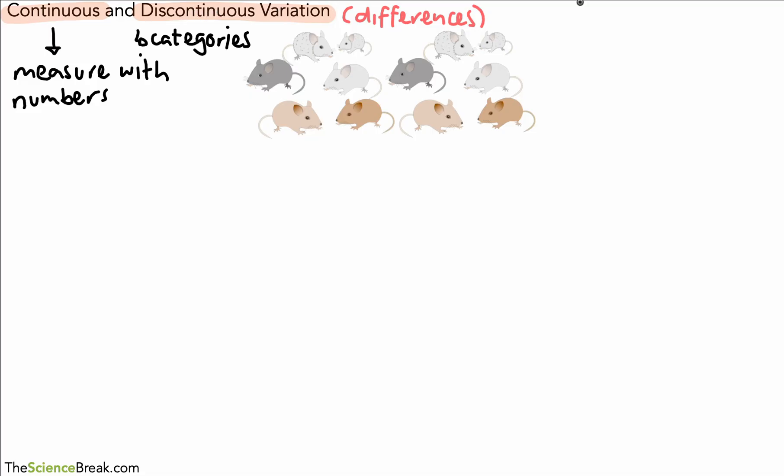So for example, if you were talking about something like tail length, have a think is that continuous variation or is that discontinuous? Well length we measure by a numerical value with numbers, millimeters or centimeters, and so that's going to be continuous variation. So if we were looking at the variation in tail lengths of these mice, you would say you were looking at one example of something that shows continuous variation.